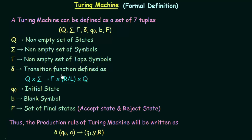Then we have Del, which is the transition function. Transition functions are there even in finite state machines and pushdown automatas, and they are defined in different ways according to how the machines work. In the case of Turing machine, the transition function Del is defined as Q cross Sigma to Tau cross R or L cross Q. This means that when we are on a particular state and get a particular input symbol, we write something into the tape, move either right or left on the tape, and then go to the next state. This will become more clear when we take our examples.